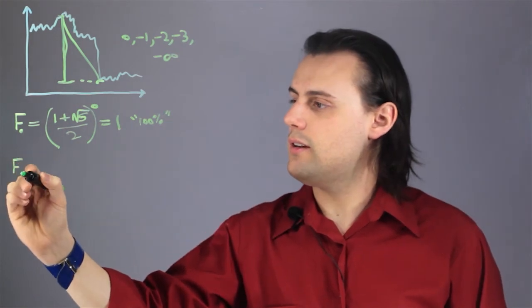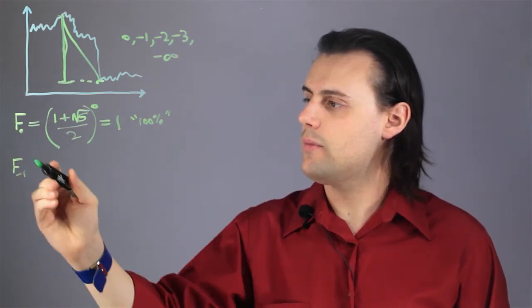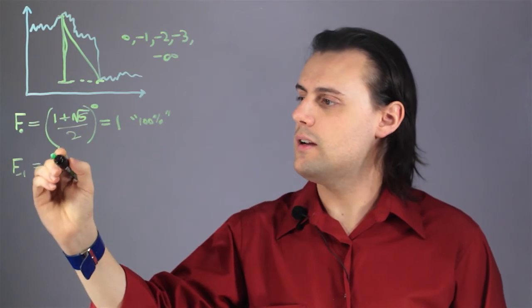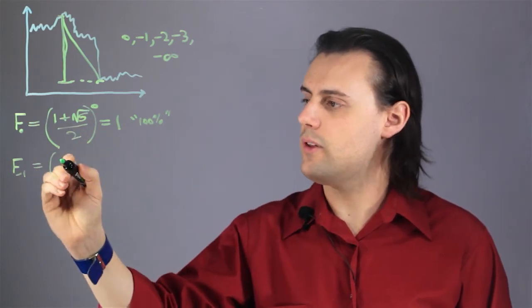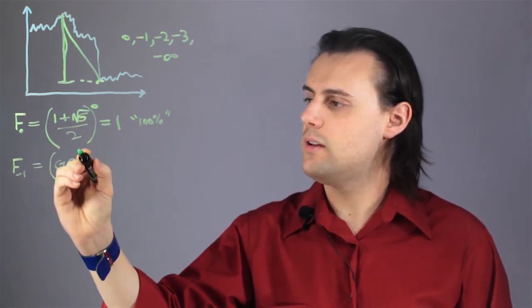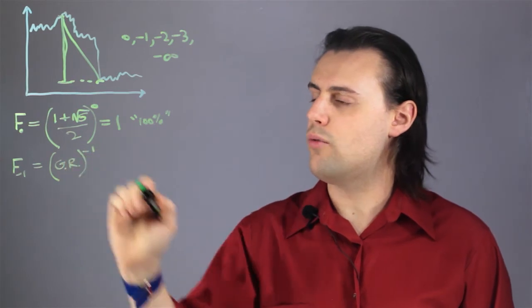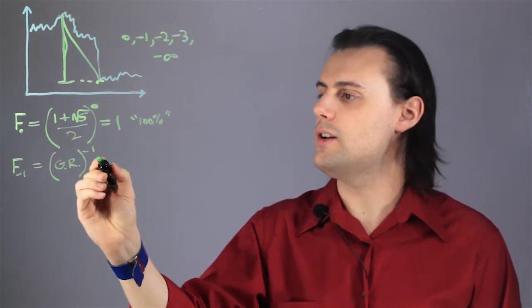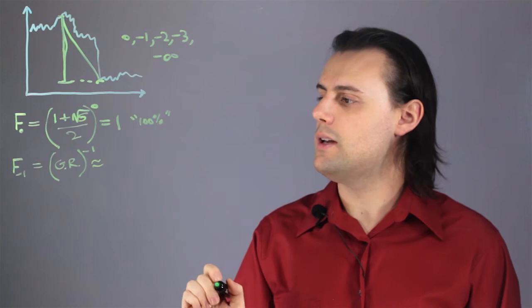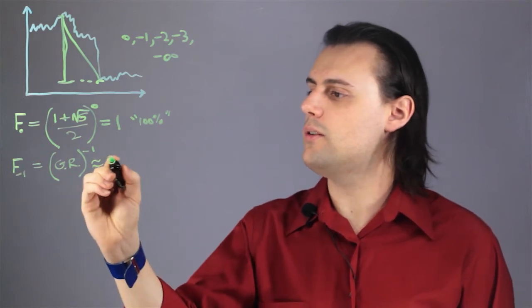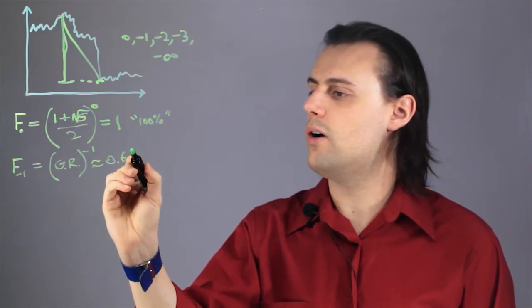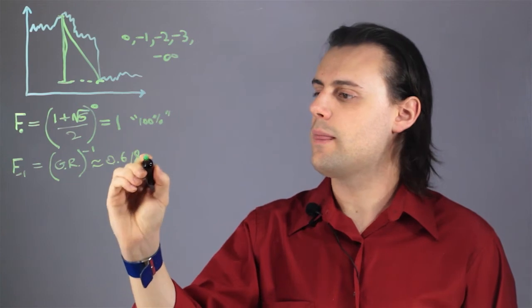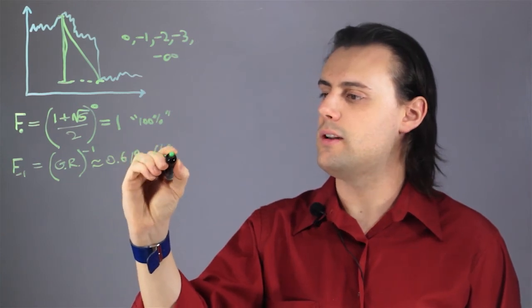Next, we can calculate F sub negative 1, which is going to be the same number, the golden ratio, raised to the negative 1 power, so 1 over the golden ratio. And that's going to be approximately equal to 0.618, or 61.8%.